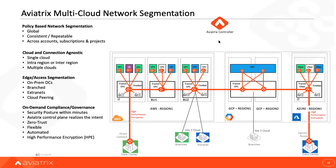This is where Aviatrix is helping customers segment the traffic based on the type of workload you have in the cloud. The beauty of this solution is that it's not just for one single cloud — it's available globally across multiple clouds: could be GCP, AWS, or Azure.